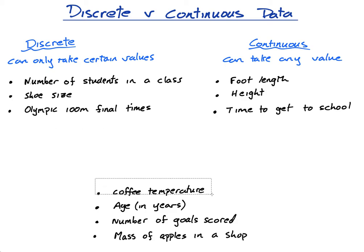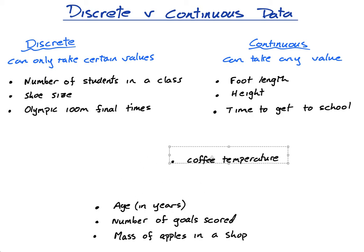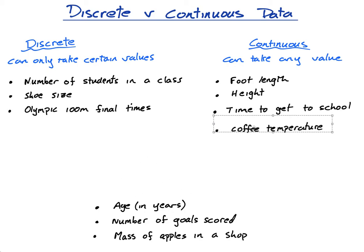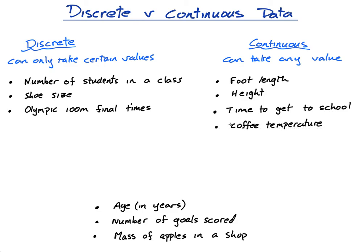Coffee temperature is continuous. If you've seen my lesson on exponential functions, the temperature continuously drops — it gets cooler and cooler. It doesn't suddenly go from 80 degrees to 70 degrees, or even from 80 to 79. It just slowly, continuously gets cooler.